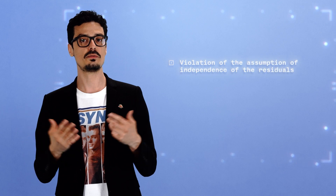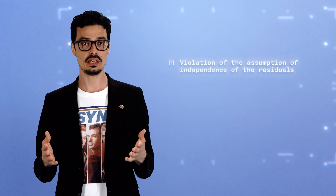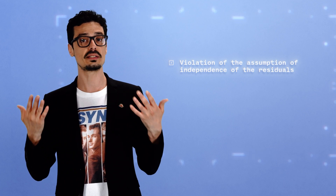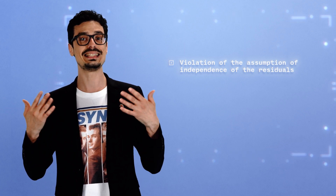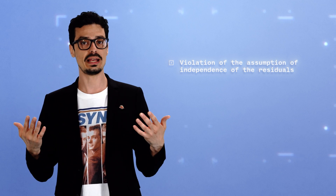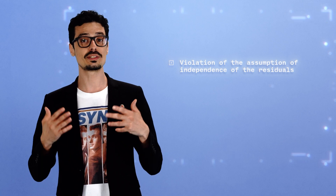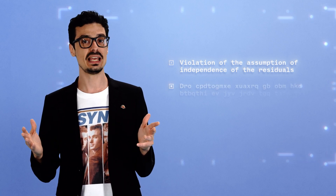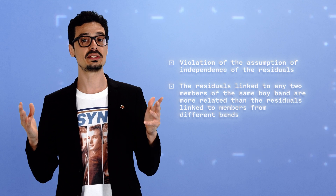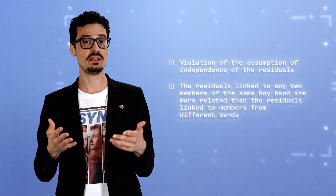With such hierarchical data, using traditional regression may result in biased estimates because of the violation of the assumption of independence of the residuals. Simply put, this assumption states that the residual associated with a given data point is independent of the residual associated with another data point. Here, this assumption may not hold true because the residuals linked to any two members of the same boy band are likely to be more related than the residuals linked to members from different bands. Using two-level linear regression will enable you to address this issue.